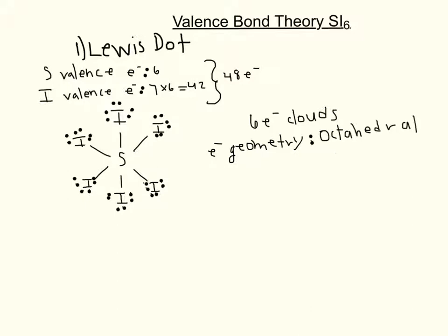We can see that sulfur has 6 valence electrons and iodide has 7 valence electrons, but with iodide we also notice that there are 6 within this molecule. So what we have to do is multiply the number of valence electrons, which is 7, by the number of iodide atoms, which is 6, and when we do that we get a total of 42. So now to find the total valence electrons, we add together the 6 from sulfur and the 42 from iodide to get a total of 48 valence electrons for this molecule.